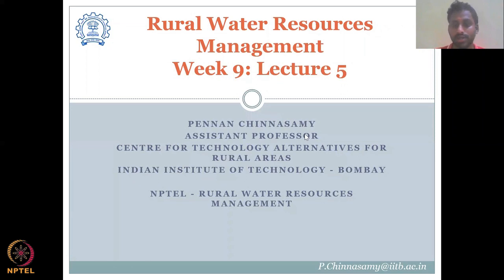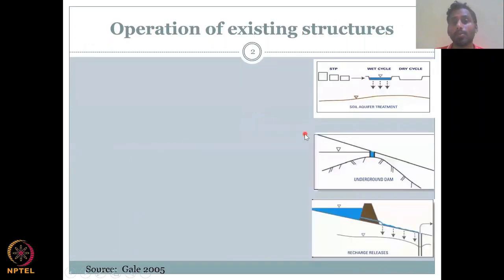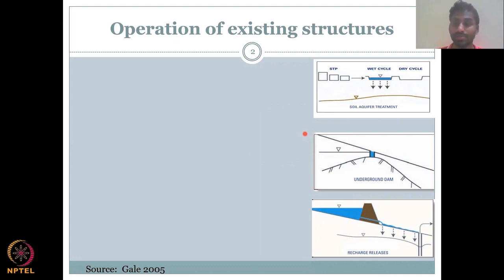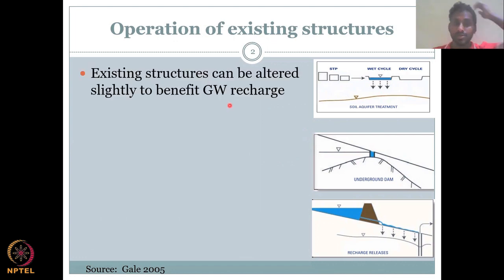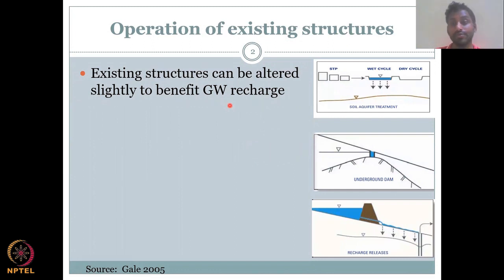Let's start with today's section on operations of existing structures. These are structures which are already there, and within that you could add some more techniques to augment water resources, especially groundwater resources in rural areas. The first one is soil aquifer treatment, which is achieved by using an existing structure, slightly altered to benefit groundwater recharge.